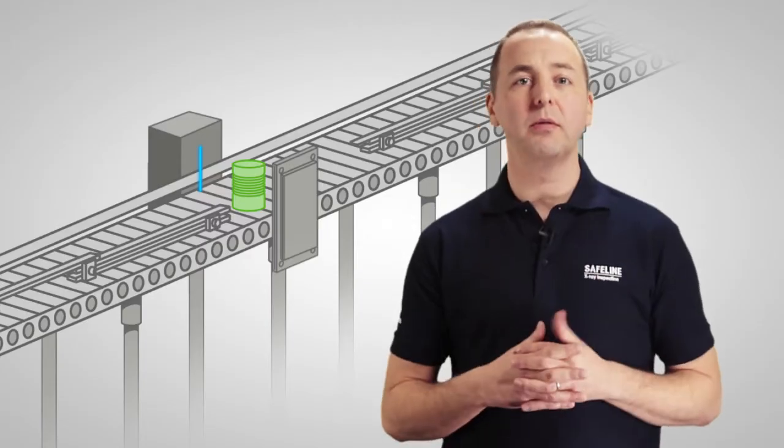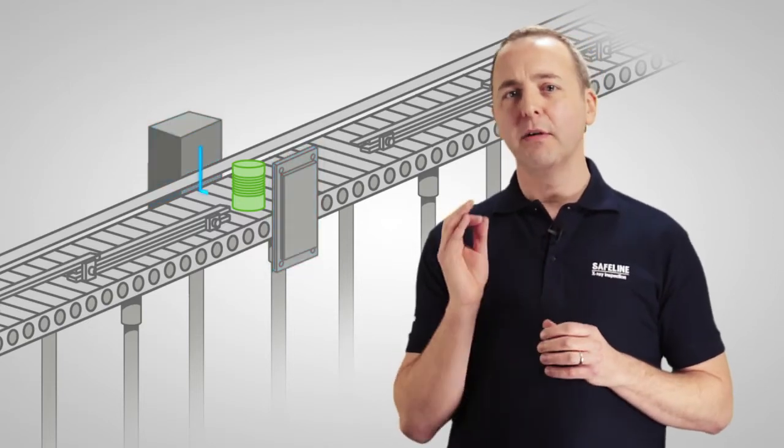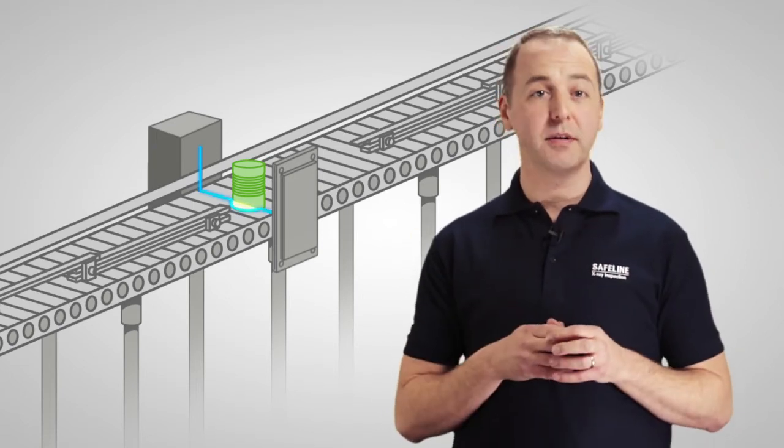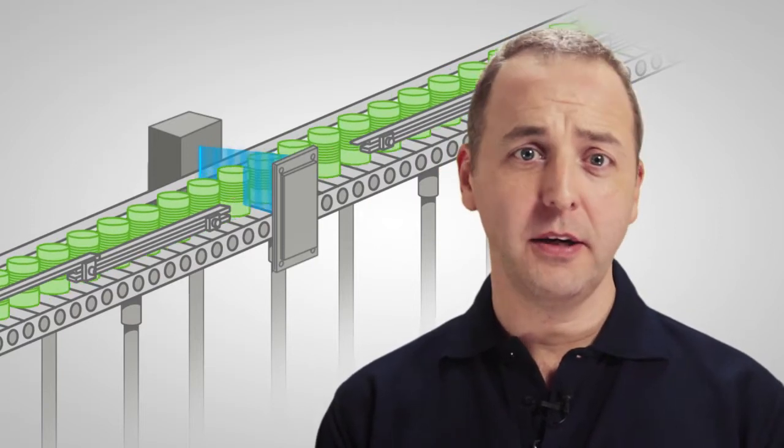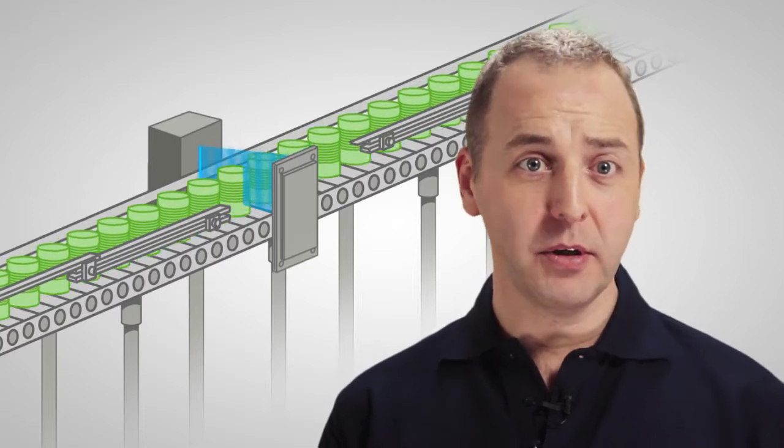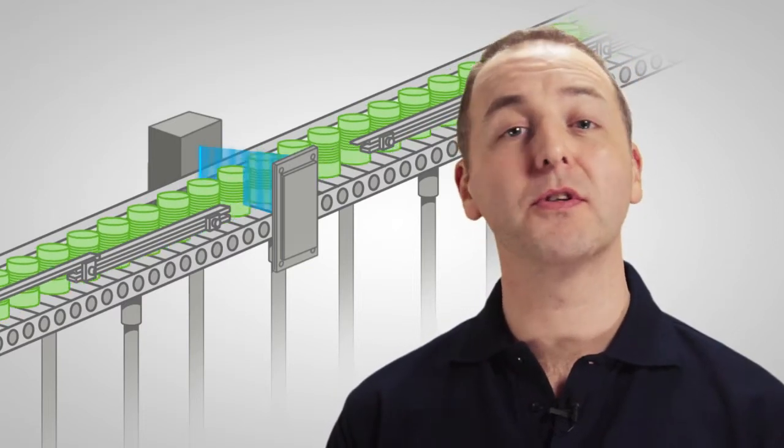A single horizontal beam system uses one generator and a single detector set. There is a variety of beam geometry sizes available to encompass the largest container passing through. With the beam's focal spot level with the base of the container, it can provide good detection in the can body, though contaminants in the base channel can be harder to detect as they can be hidden in the strengthening rings. The dome effect of a larger vacuum may also hide smaller contaminants.